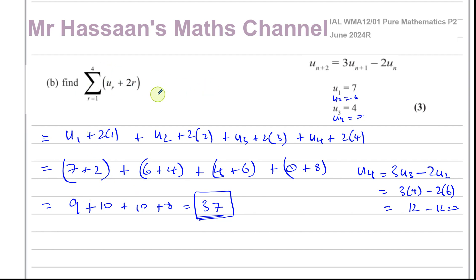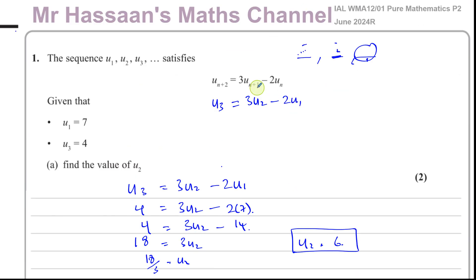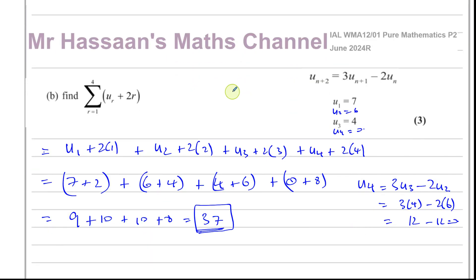There's four terms that they want out of this sum, and you generate them manually like that. So u₁ is the first term, u₂ is the second term, u₃ is the third term of what we had up here. Okay, this recurrence relationship. And r is just the number that you have to substitute in here.